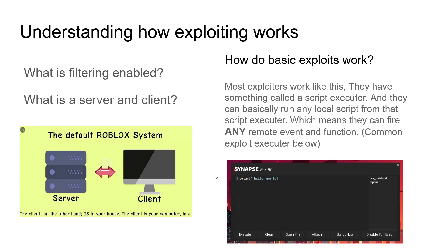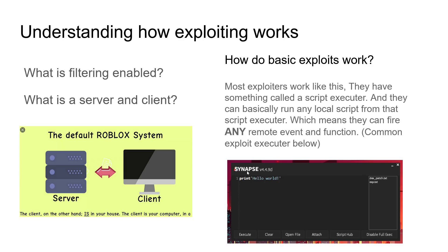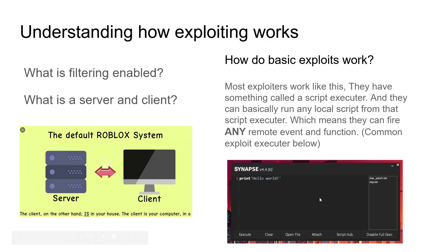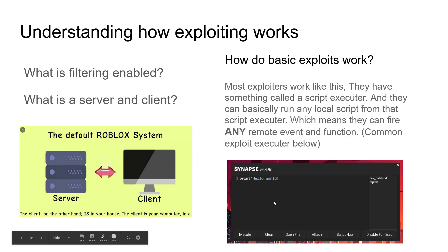So how do basic exploits work? Most exploits work like this: they have something called a script executor. Here I have a screenshot of a popular executor called Synapse — I just looked up an image of it, I don't have it. Basically, it's just like a script that they can run in any game. The thing is, this is a local script, so they don't run a server script and they can't change things for everyone else. Anything that runs in the script only happens for them.